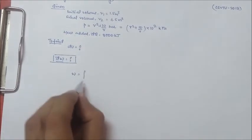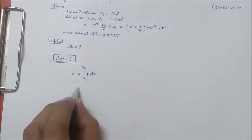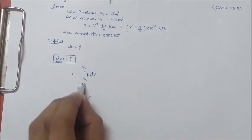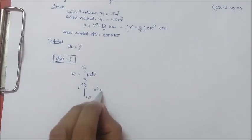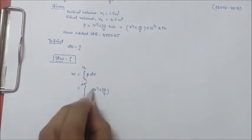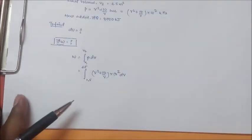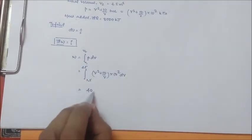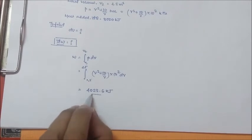Work done is given by integral of P dV, from V1 to V2. We know V1 is 1.5 and V2 is 4.5. P in terms of volume is V squared plus 10 by V times 10 to the power 2, dV. It is a simple integration and the value comes to 4023.6 kilojoules. This is our work transfer.